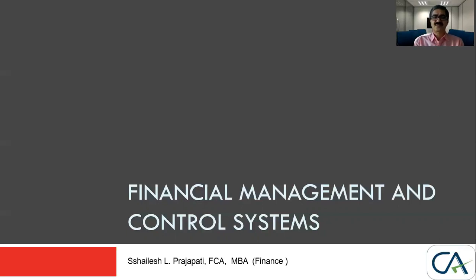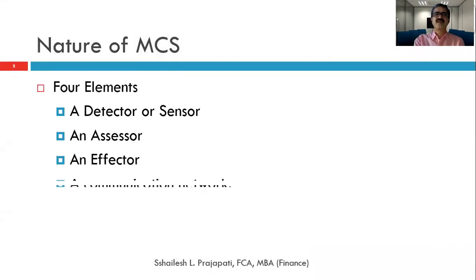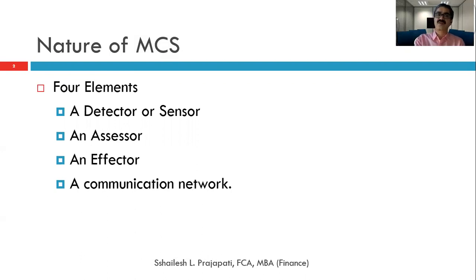Let us look at the first chapter of financial control systems. There are basically four elements: a detector, an assessor, an effector, and a communication network.